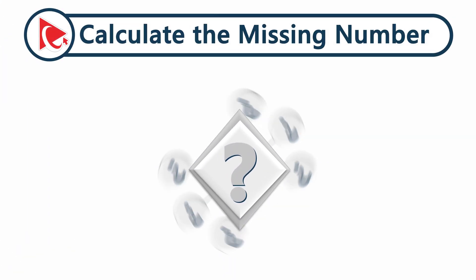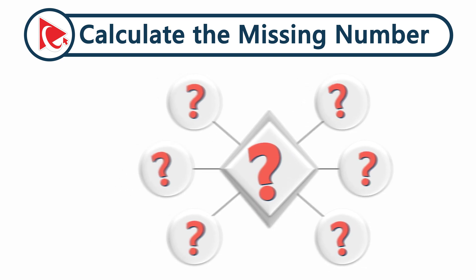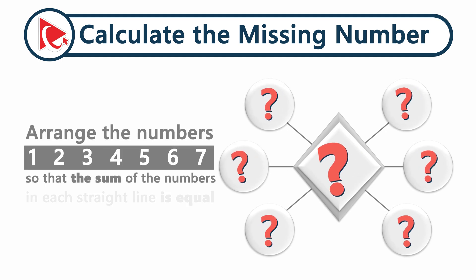You're presented with an amazingly cool looking shape. The shape has placeholders for seven numbers. Your goal with this question is to arrange the numbers 1, 2, 3, 4, 5, 6, and 7 so that the sum of the numbers in each straight line is equal.